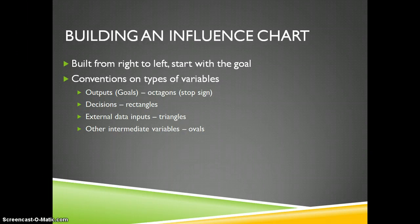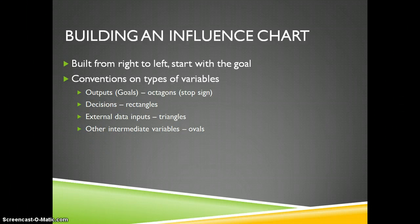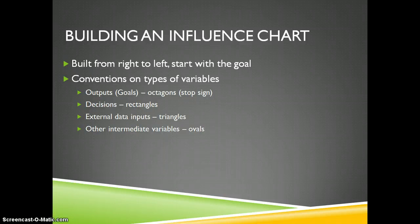Drawing an influence diagram, there are a couple of conventions to observe. We want to work from left to right, but we build it from right to left. On the right-hand side we have our goals — outputs of the model — shown with an octagon or stop sign. On the left-hand side we have the decisions, shown as rectangles with blank spaces to fill in. In between we have intermediate quantities: data from the outside world represented by triangles, and intermediate calculated variables shown in ovals.